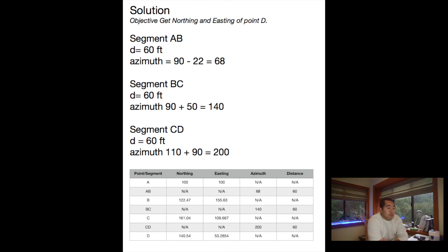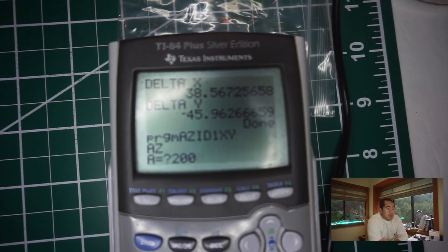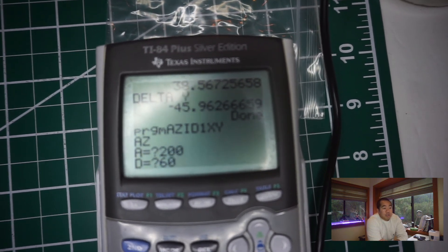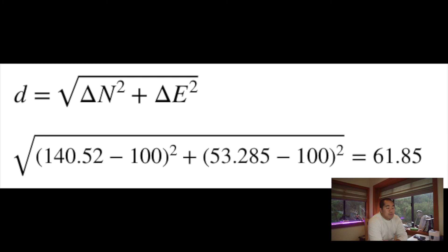Now we have the northing and easting of point C, so you kind of get what we're doing from each point to point. Now we want to go to coordinates of point D. We know the azimuth angle of C will be 90 plus 110, so that's going to give us an azimuth angle of 200 and a distance of 60. The northing and easting of point D will be 140.54 and 53.2854. From there we can run the distance equation, which is just the square root of the northing squared plus the easting squared. That'll give us a final distance of 61.85. Basically the square root of 140.52 minus 100 squared plus 53.285 minus 100 squared equals 61.85.